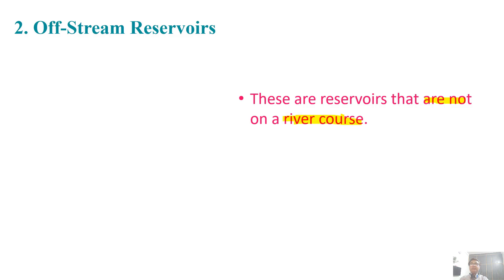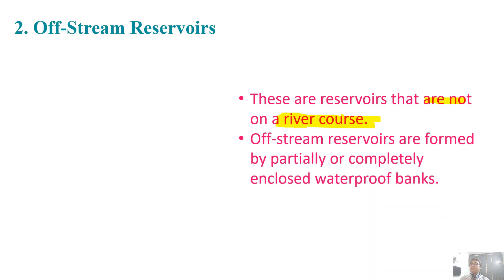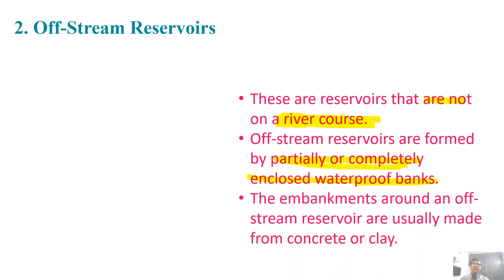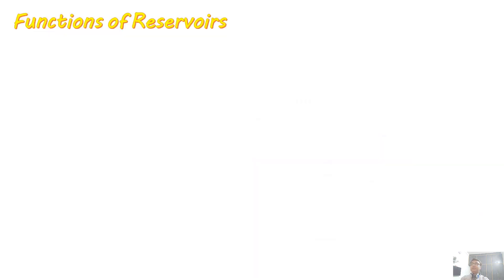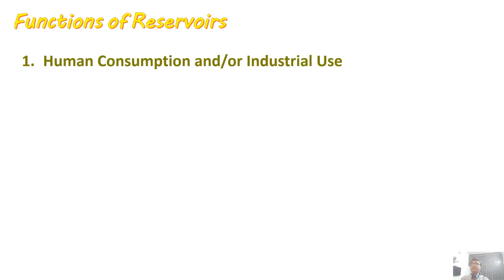An off-stream reservoir can be partially or completely enclosed with waterproof banks. It can have embankments around it. An off-stream reservoir is usually made of concrete or clay. These are partially or completely waterproof banks and are on the coast. Now let's discuss the functions of reservoirs.